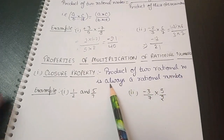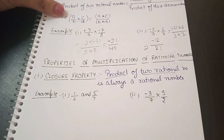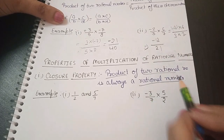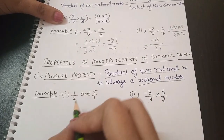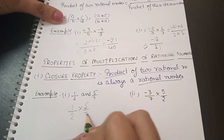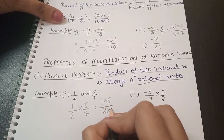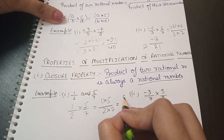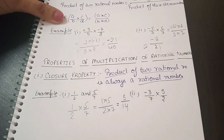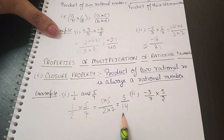The closure property states that the product of two rational numbers is always a rational number. When we multiply two rational numbers, the result is always a rational number. For example, 1/2 multiplied by 5/7: we multiply numerators to get 5 and denominators to get 14, giving us 5/14, which is a rational number.